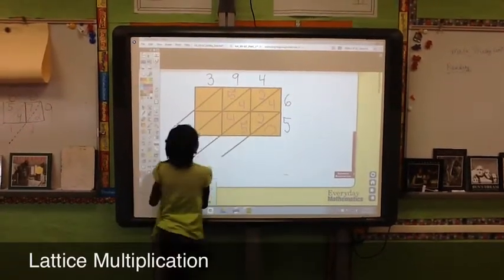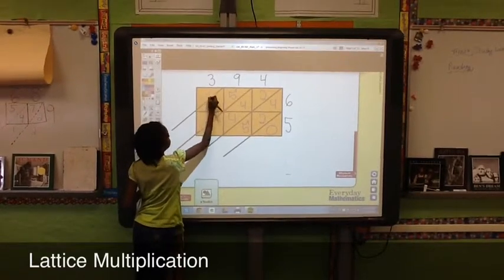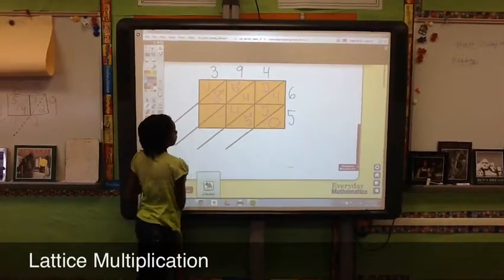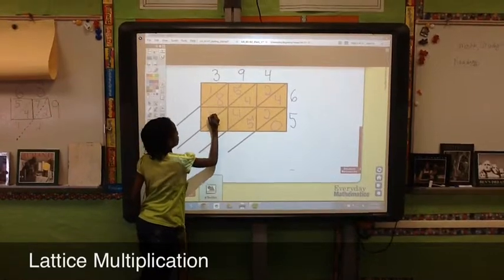Then you do 3 times 6, which equals 18. Then you do 3 times 5, which equals 15.